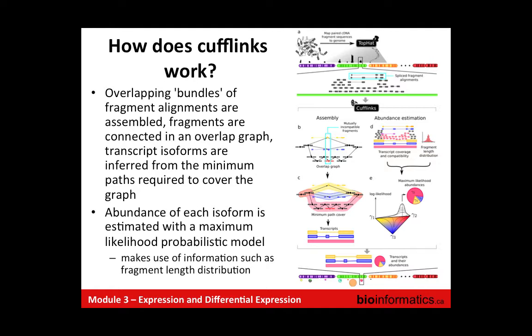The abundance of each isoform is estimated from a probabilistic model. Cufflinks looks at the transcript definitions and assigns fragments to each, computing a likelihood that each fragment belongs to each inferred transcript, then assigns an expression value to each transcript. It also makes use of information like the fragment length distribution — depending on the distribution of fragment lengths, there are different likelihoods of measuring certain events, and it tries to take that into account when estimating expression.